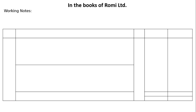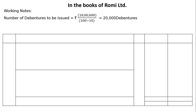Record necessary journal entries in the books of Romy Ltd. Working notes: number of debentures to be issued = Rs. 18 lakhs divided by Rs. 90, because Rs. 100 is the face value per debenture and 10% is the discount on issue of debenture. So 100 minus 10% of 100 equals Rs. 90, giving us 20,000 debentures to issue to satisfy the purchase consideration of Rs. 18 lakhs.